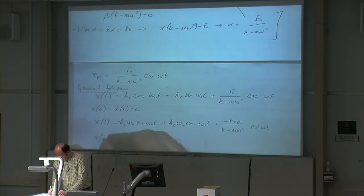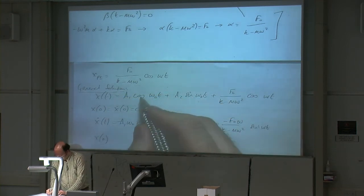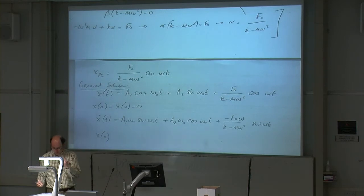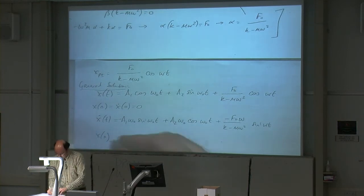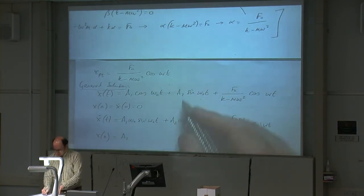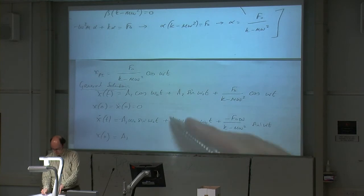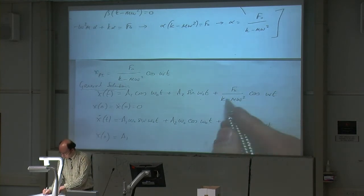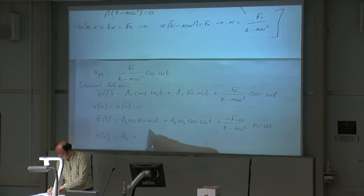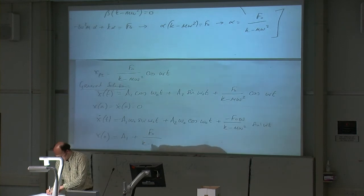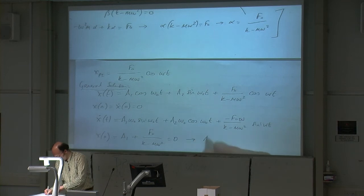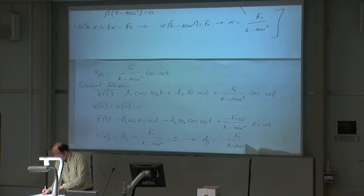Applying x(0) equals 0: referring to the general solution, cosine of 0 is 1 so we have a1; sine of 0 is 0 so that term disappears; cosine of 0 is 1 so we have the last term. This gives: a1 plus f0 divided by (k minus m omega squared) equals 0. Therefore a1 must equal minus f0 divided by (k minus m omega squared).